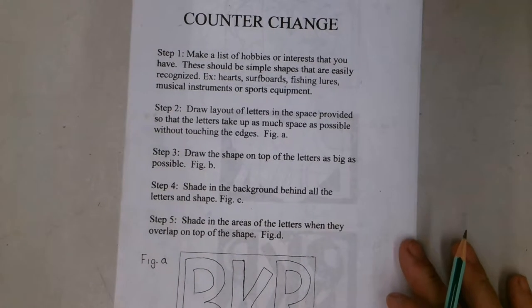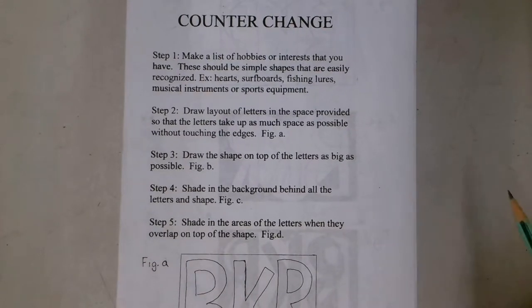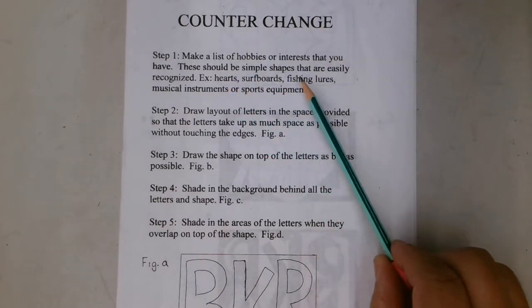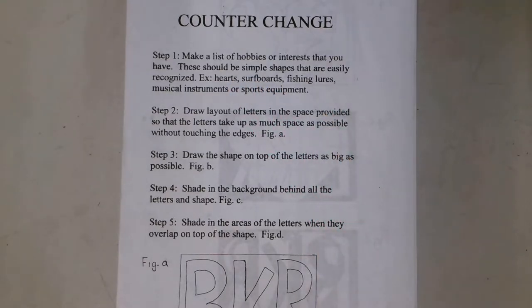So if we start with the counter change handout, it says you have to make a list of hobbies or interests that should be simple shapes that are easily recognizable. No one's going to confuse the outline of a bell with the outline of a banana. So there's shapes out there that people easily recognize.